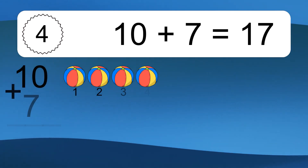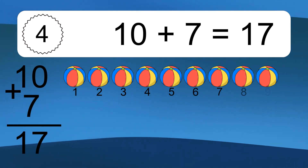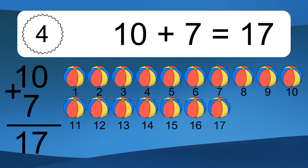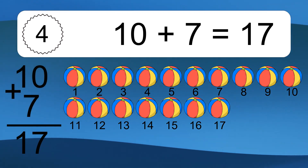10 plus 7 equals what? 10 plus 7 equals 17. Let's count it.